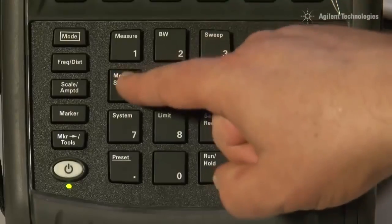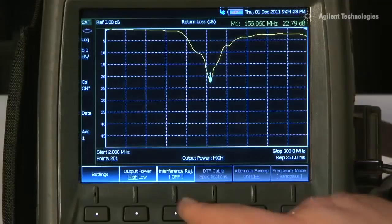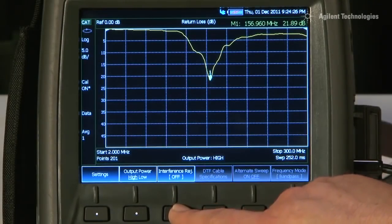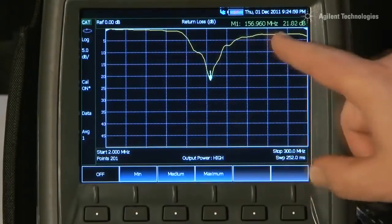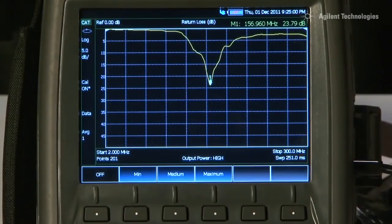So on the FieldFox, under the Measurement Setup button, there is a special feature called Interference Rejection. Turning on the Interference Rejection minimizes the chance of having erroneous responses on your Return Loss or VSWR traces.